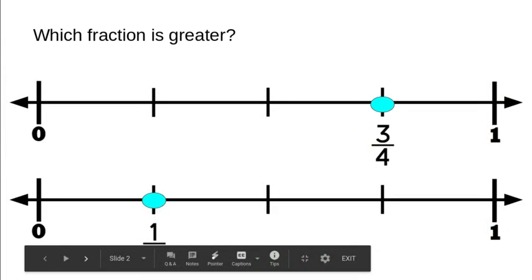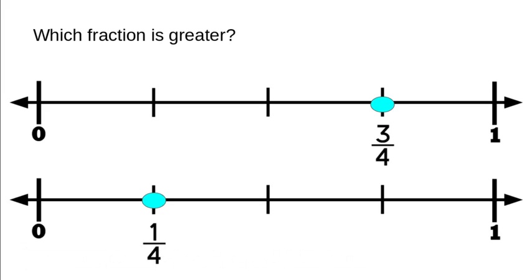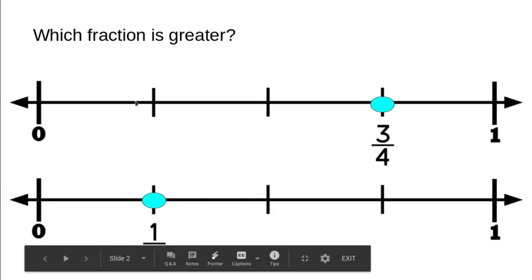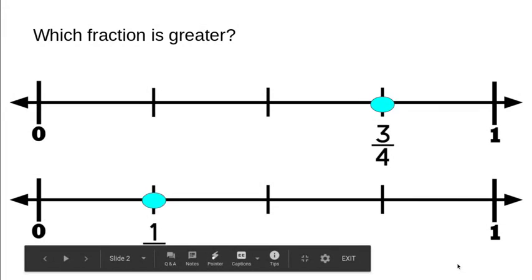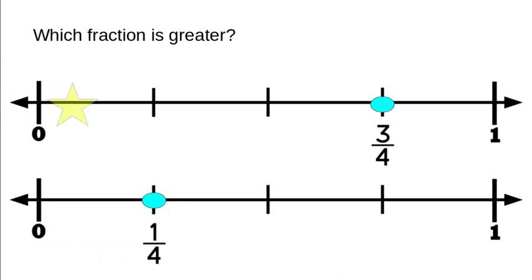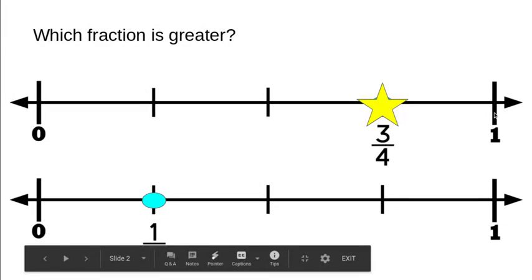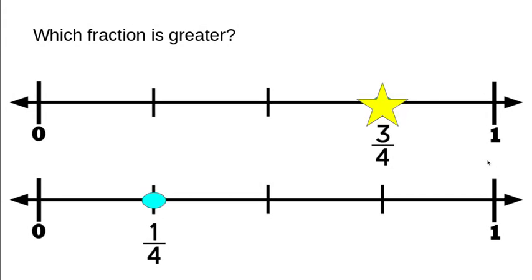We have a number line here and this question is asking which one is greater. We see that we have two number lines and they're both broken up into fourths. We have three fourths and one fourth, and they want to know which fraction is greater. Three fourths is greater — it's closer to the number one and closer to being a whole piece of the number line.